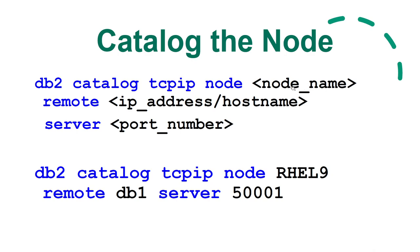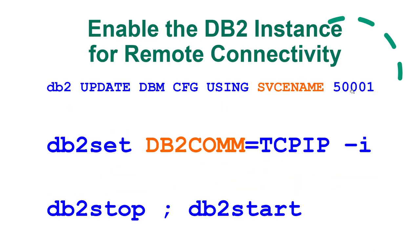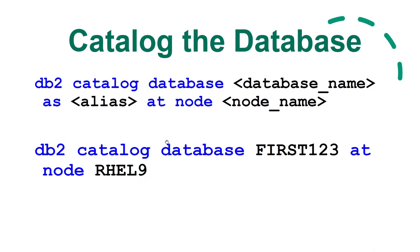The catalog TCPIP node command syntax is: 'db2 catalog tcpip node [node_name] remote [IP address or hostname] server [port number]'. The node name is your choice. The remote value is the IP address or hostname of the database server. The server value is the port number of the DB2 instance, which must match the port configured on the database server.